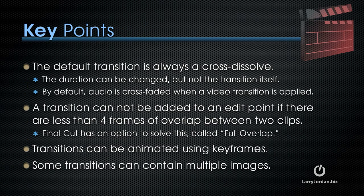The default transition is always a cross-dissolve. The duration can be changed, but not the default transition itself. By default, audio is cross-faded when a video transition is applied. A transition cannot be added to an edit point if there are less than four frames of overlap between two clips. Final Cut has an option to solve this called Full Overlap, and we'll talk more about that in a bit.